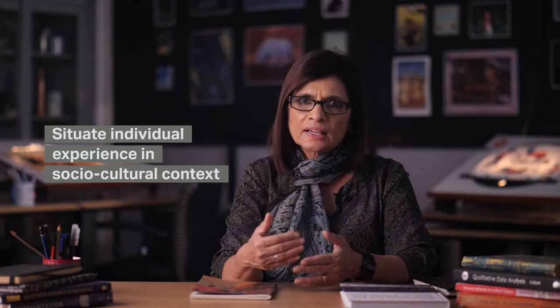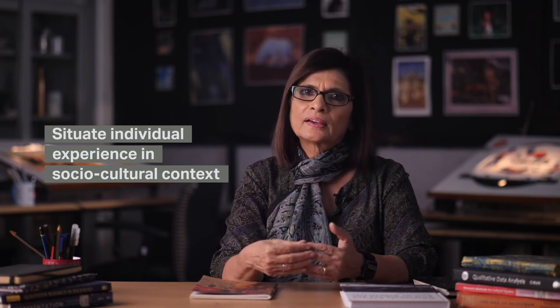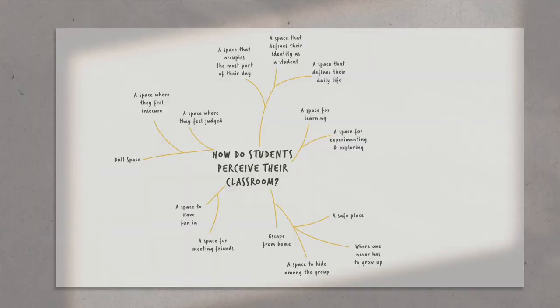For our study to be considered ethnographic in its outcome, it would have to reflect a certain kind of understanding and knowledge. This would include an understanding of the relationships that the participants have with each other. The study would represent the perceptions of various participants about their classroom — what the classroom means to different participants. For instance, the classroom could be seen as a space for learning, or as a space for meeting friends and mentors. For some, it could be an escape from home. For others, it could be a restrictive, dull space.